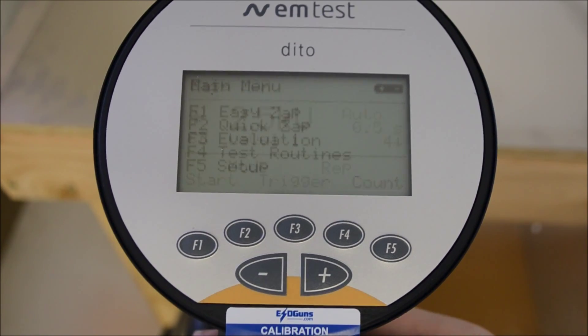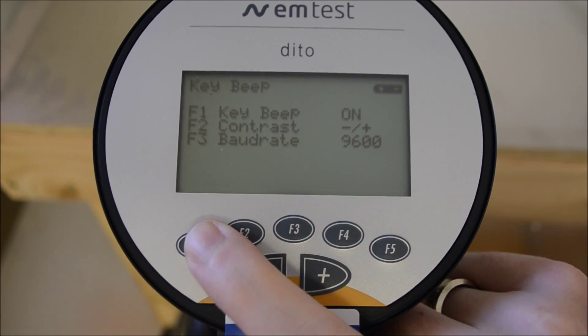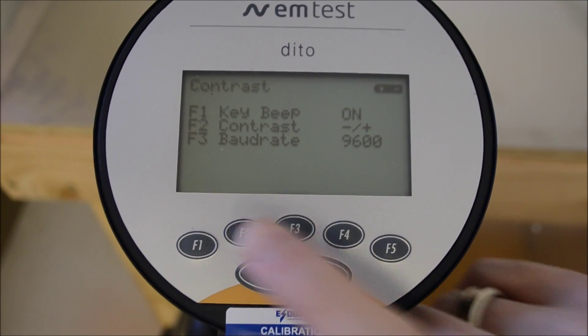Returning to the setup menu, F2 now takes us into the hardware setting allowing us to set audio trigger, screen brightness, and the mod rate, the technical term for download speed to PC.